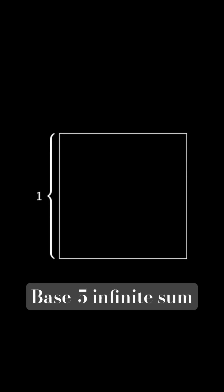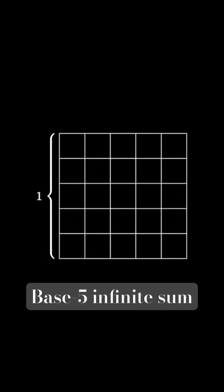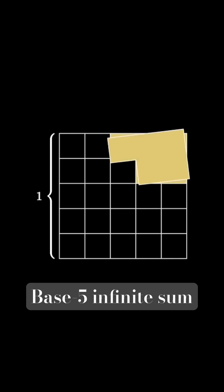Start with a square of side length 1 and cut it into 25 congruent squares. These 5 here represent 1 fifth of the area.